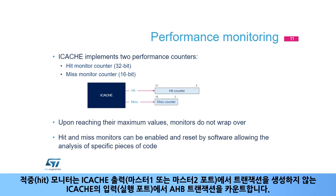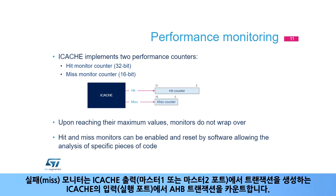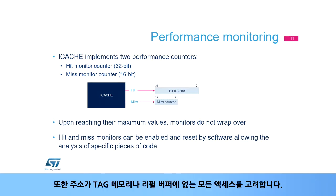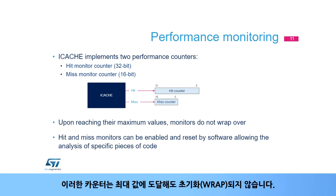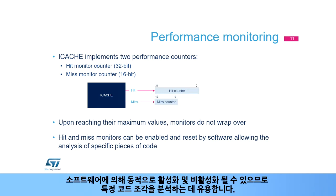The hit monitor counts the AHB transactions at the input of iCache execution port that do not generate a transaction on iCache output Master 1 or Master 2 port. It also takes into account hit-under-miss events. The miss monitor counts the AHB transactions at the input of the iCache execution port that generate a transaction on iCache output Master 1 or Master 2 port, including all accesses whose address is not present in either the tag memory or the refill buffer. These counters do not wrap over when they reach their maximum value. They can be dynamically enabled and disabled by software, which is useful for analysing specific pieces of code.